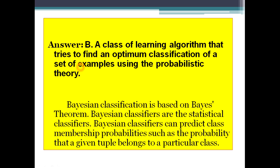A Bayesian classifier is a class of learning algorithm that tries to find an optimum classification of a set of examples using probabilistic theory. Bayesian classifiers are statistical classifiers that can predict class membership probabilities — such as the probability that a given tuple belongs to a particular class.